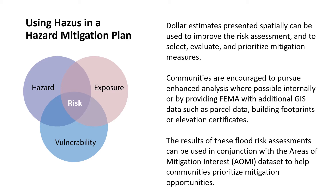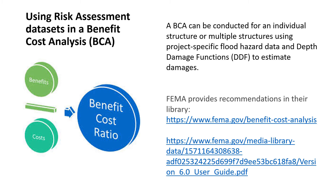In a hazard mitigation plan, dollar loss estimates presented spatially can be used to improve the risk assessment and to select, evaluate, and prioritize mitigation measures. Communities are encouraged to pursue enhanced analysis where possible, internally or by providing FEMA with additional GIS data such as parcel data, building footprints, or elevation certificates. The results of these flood risk assessments can be used in conjunction with the areas of mitigation interest dataset to help communities prioritize mitigation opportunities and incorporate them into hazard mitigation plans. A benefit cost analysis, or BCA, can also be conducted for an individual structure or multiple structures using project-specific flood hazard data and depth damage functions, or DDF, to estimate damages.